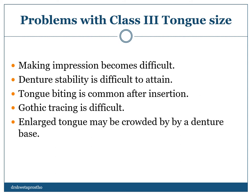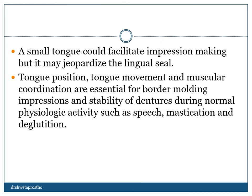Postgraduate students should note tongue size before selecting the exam case. The enlarged tongue may show tongue cramping, which interferes with speech and repeatedly dislodges the denture. A small tongue jeopardizes the lingual seal, so we can make the lingual flanges thicker or use wider posterior teeth. Tongue position, movement, and muscular coordination are essential for border molding, impression making, and ultimately the stability of dentures during all physiologic activities — speech, mastication, and deglutition.